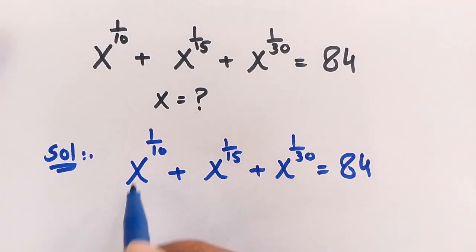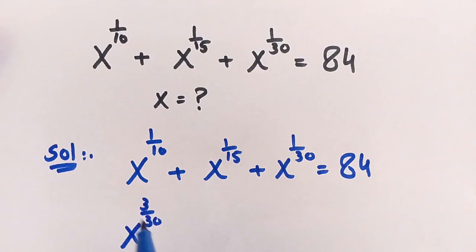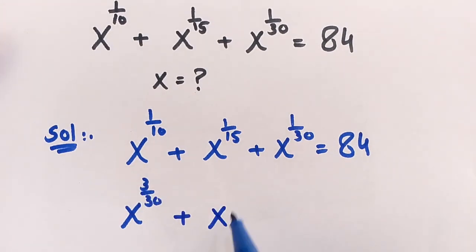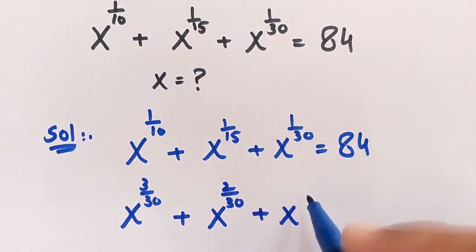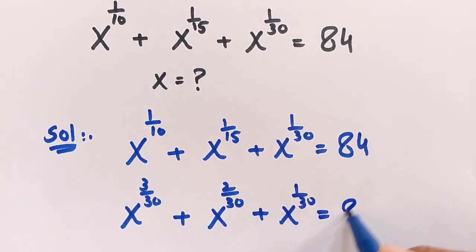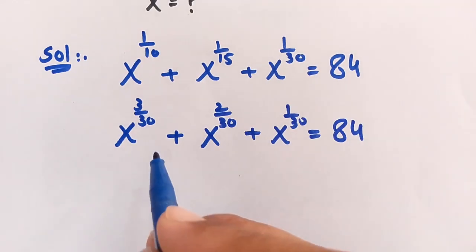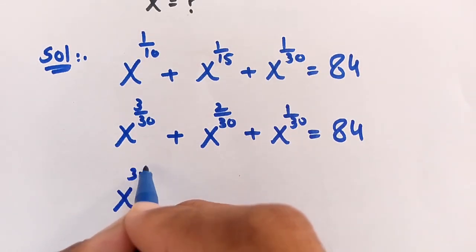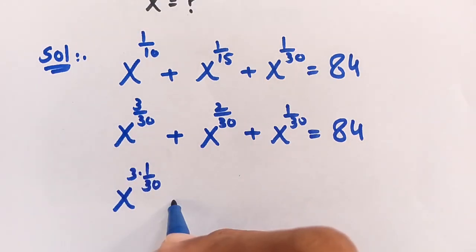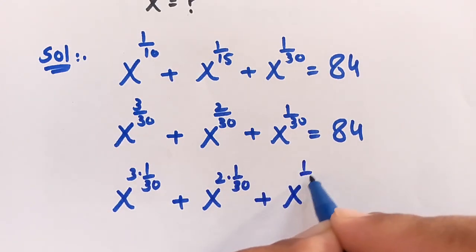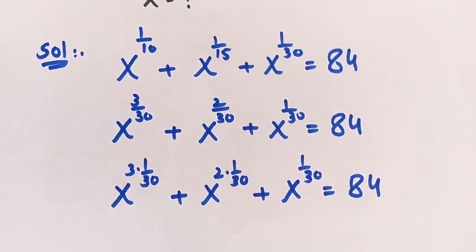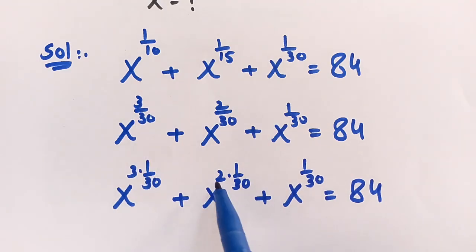To solve this, x to the power of 1 over 10 is also equal to 3 over 30, since 3 divided by 30 equals 1 over 10. Then x to the power of 1 over 15 is also equal to 2 over 30, since 2 divided by 30 equals 1 over 15. And x to the power of 1 over 30 remains as is. So we rewrite each term with denominator 30: 3 times 1 over 30, 2 times 1 over 30, and 1 over 30.